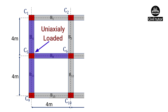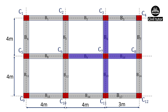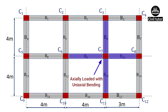Column C5 satisfies the criteria of uniaxial bending, as in the case of column C2. Column C6 is connected by four beams of span 4 meters each. Therefore, due to symmetrical loading, the net moment along both axes will be zero, and the load will pass through the centroid of the column. Hence column C6 is an axially loaded column. Column C7 is also connected by four beams, but B9 and B10 have different spans, causing asymmetrical loading. On the other hand, B6 and B13 have the same span, so the net moment due to B6 and B13 will be zero. Therefore, the moment will be generated along one axis only, making C7 an axially loaded column with uniaxial bending.